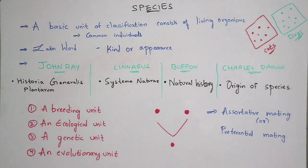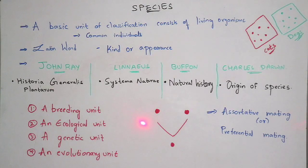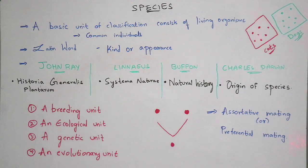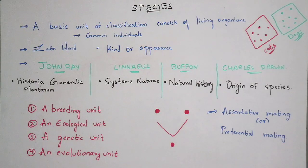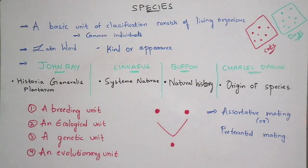Coming to the evolutionary unit — it consists of similar structure and similar functional characteristics. For example, if you take a cat, each cat which is formed after copulation and the parent individuals will have the same structure and even the same functional characteristics. If the parent cat drinks milk, in the same way the fertile individual which is formed after copulation will also drink milk. So evolutionary unit means it shows similar structure — same legs, nose, eyes as the parent individual — and it performs the same functions, such as movement and drinking milk.